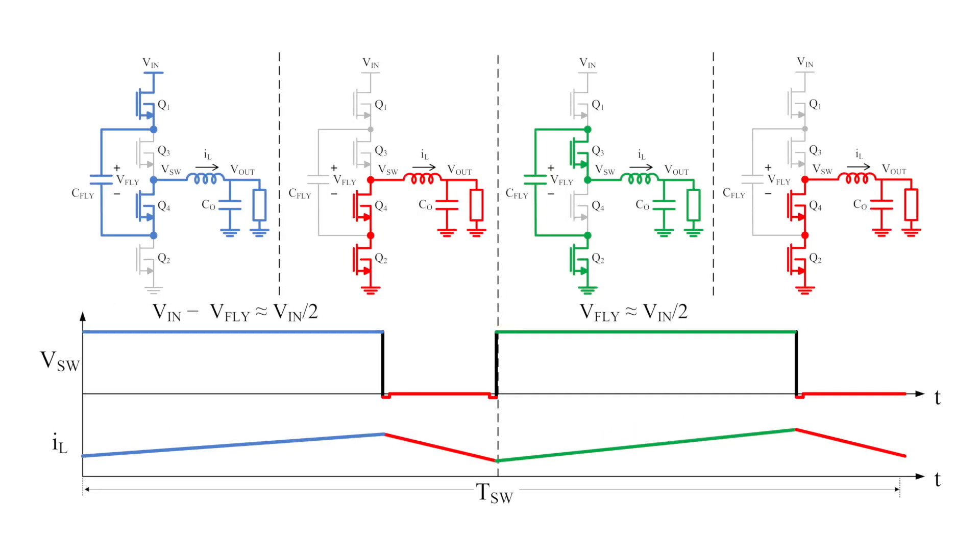As the input voltage decreases, the controller automatically increases the duration of stages one and three, in other words increases the duty cycle, in order to maintain a regulated output voltage. This has the effect of reducing the inductor current ripple until a minimum is reached when the input is exactly equal to twice the output.